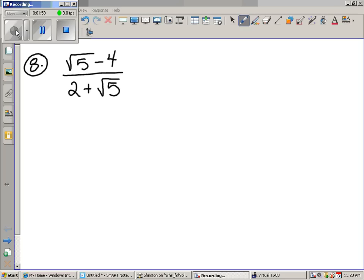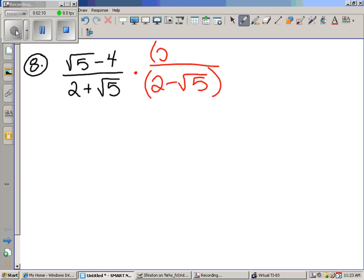All right. So now we saw how to solve the problem using the calculator. Let's try and solve it the long way by hand. How do you solve a problem like this? Multiply by the conjugate. We're going to be multiplying by two minus the square root of five over two minus the square root of five.